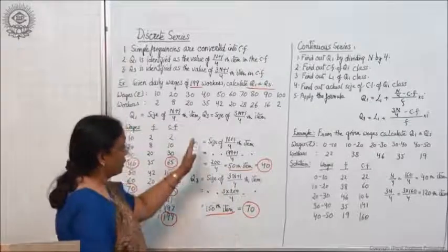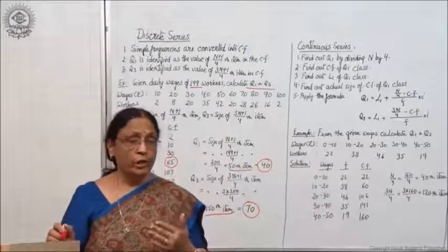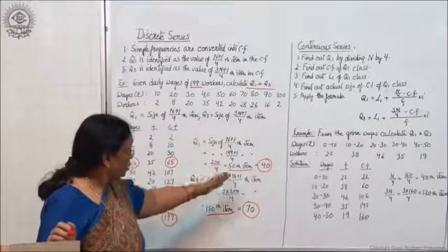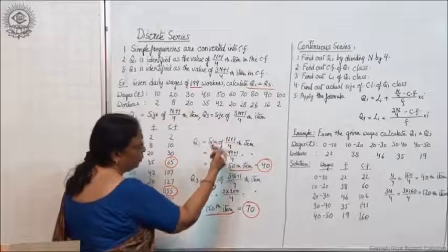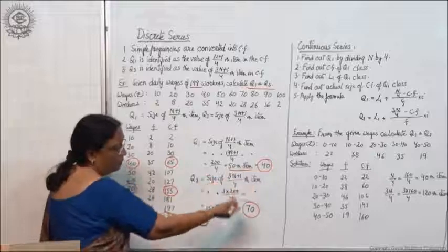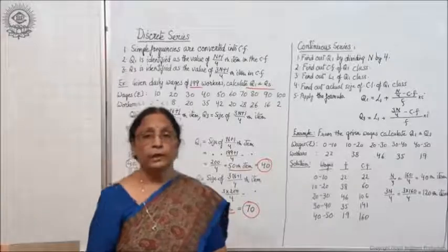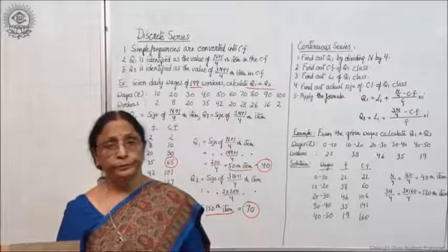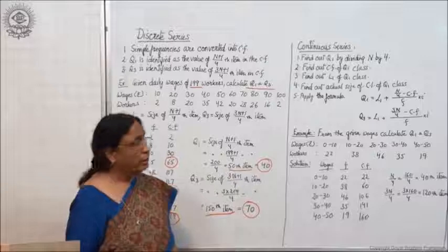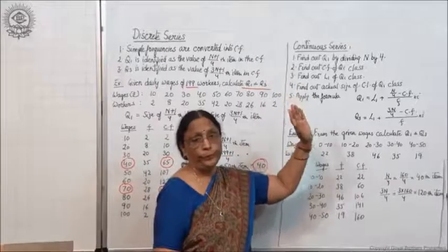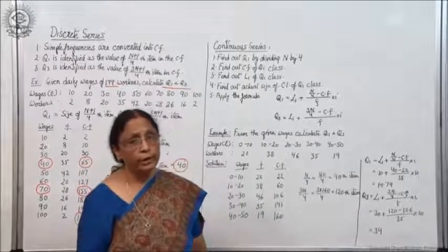Statistics is very interesting — it is a game of numbers, so it is very easy to learn. Just learn the method properly, learn the formula, put the values, and get the correct answer. This is how we calculate Q1 and Q3 in the case of discrete series. Now what remains is continuous series — we will see how to calculate quartiles in that case.